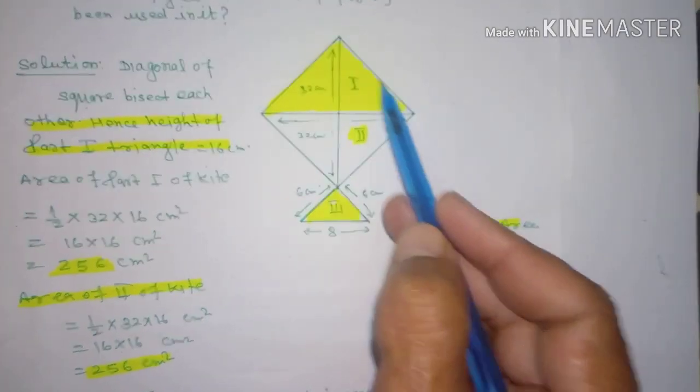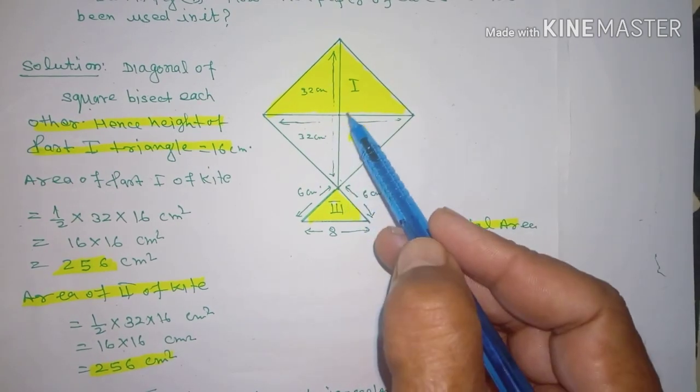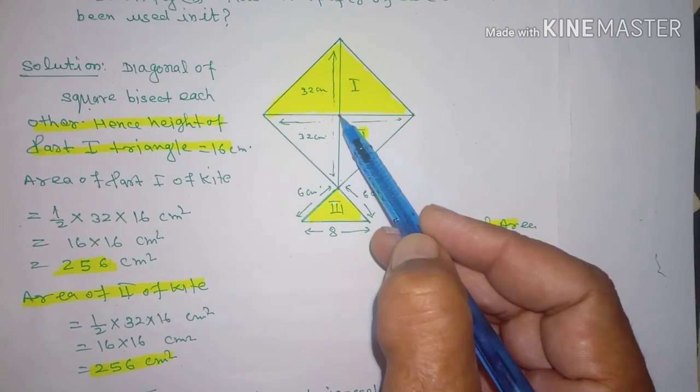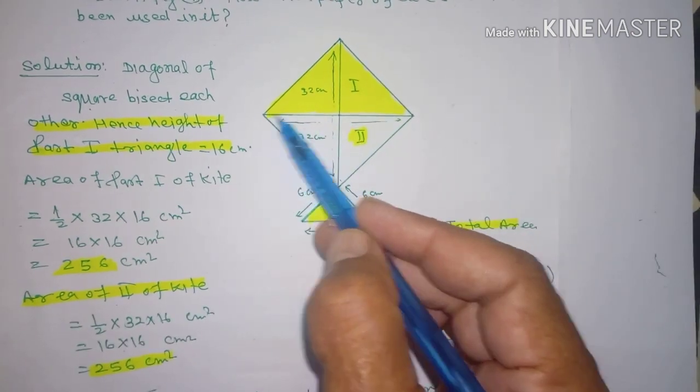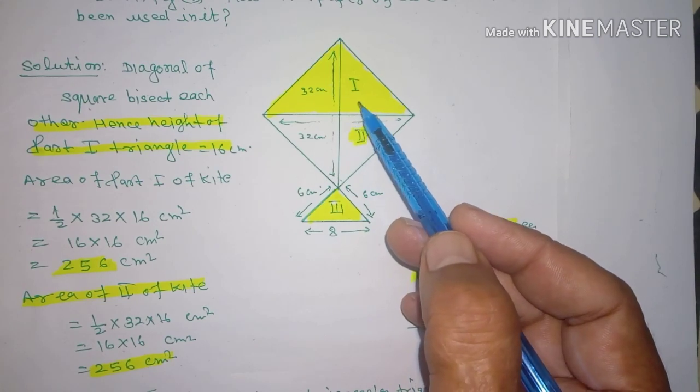Ab humko kya karna hai dostho. Yeh first portion hai, yeh first shape hai, aur yeh second hai, aur yeh third hai. First shape mein yeh triangle hai. Iske height agar humko mil jaye, base mil jaye, toh hum area nikal sakte hain - half into base into height.